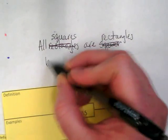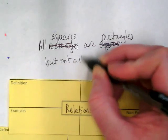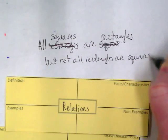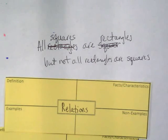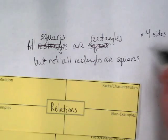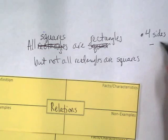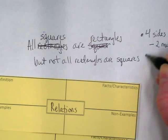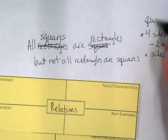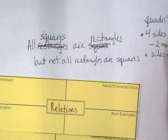Why? Let's talk about why. What is the definition of a rectangle? It's got four sides, two matching sets, parallel sides. These are all quadrilaterals because quadrilaterals have four sides. The sides are parallel — that's critical.